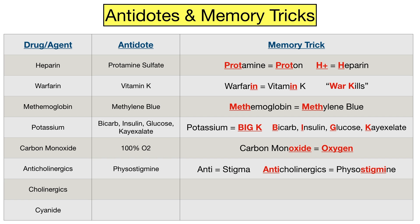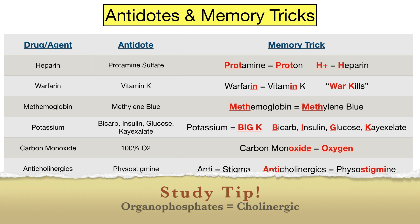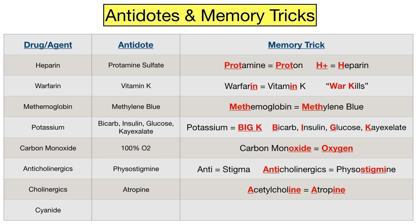Next we have the opposite of anticholinergics — cholinergic agents, which mimic or enhance the effects of acetylcholine and stimulate the parasympathetic nervous system. Do you know the antidote for cholinergic toxicity? It's atropine, which inhibits acetylcholine receptors. Both acetylcholine and atropine start with A and end in I-N-E. Another exam tip: question stems like to use organophosphate insecticides when asking about cholinergic toxicity.